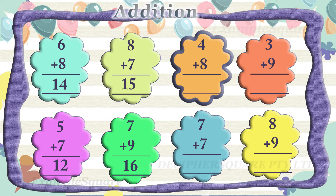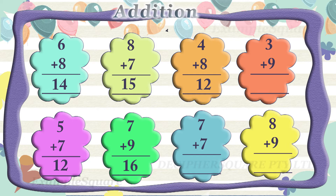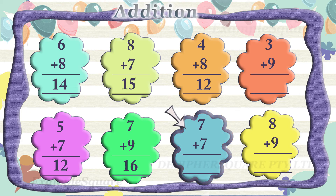What is 4 plus 8? 4 plus 8 equals 12. What is 7 plus 7? 7 plus 7 equals 14.